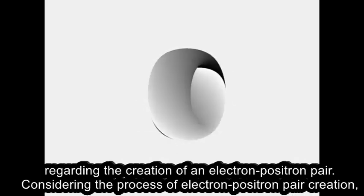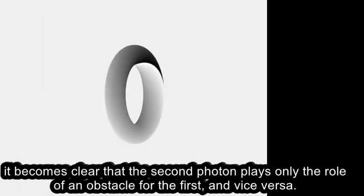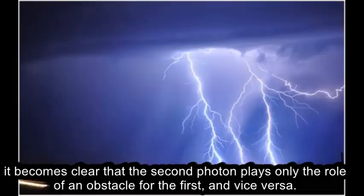Considering the process of electron-positron pair creation, it becomes clear that the second photon plays only the role of an obstacle for the first, and vice versa.